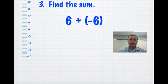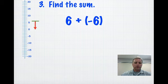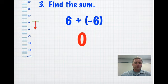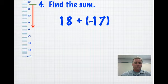Find the sum. 6 plus negative 6. Start out at a positive 6. If you're adding negatives, you're going down. That puts you at 0. Number 4: 18 plus negative 17. Start out at positive 18. Since we have 17 negatives, we're going down. That puts us at positive 1.